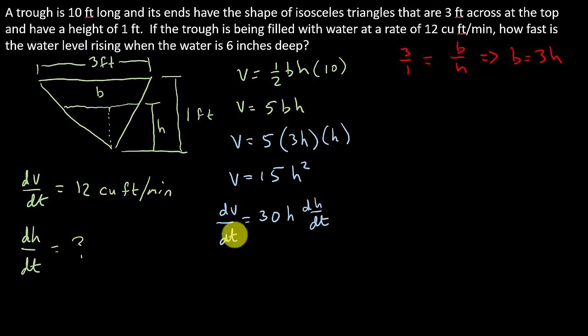So let's see, dV/dt, well let's go ahead and just solve for dh/dt first. So if I divide both sides or multiply by 1 over 30h, I get dh/dt = (1/30h) times dV/dt. So now let's go and plug everything in.